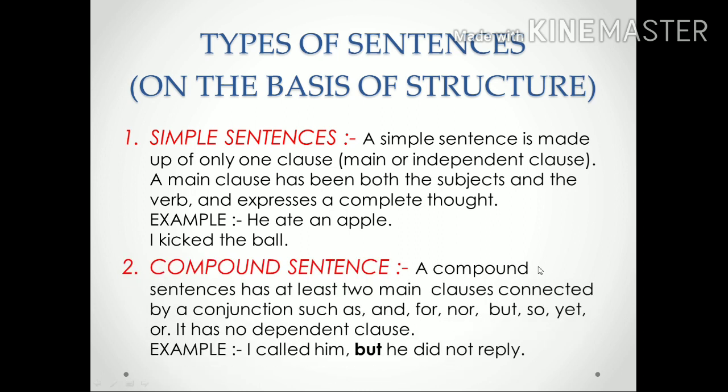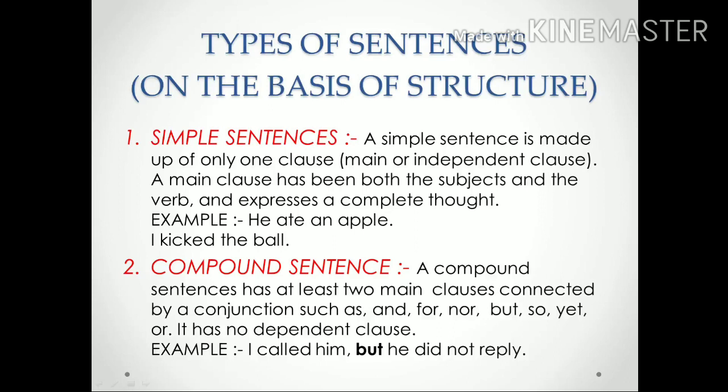Next, compound sentences: a compound sentence has at least two main clauses. These clauses are connected by coordinating conjunctions such as 'and', 'for', 'nor', 'but', 'so', 'yet', or 'or'. A compound sentence has no dependent clause. Example: 'I called him but he did not reply' — here 'but' is the conjunction connecting the two clauses.